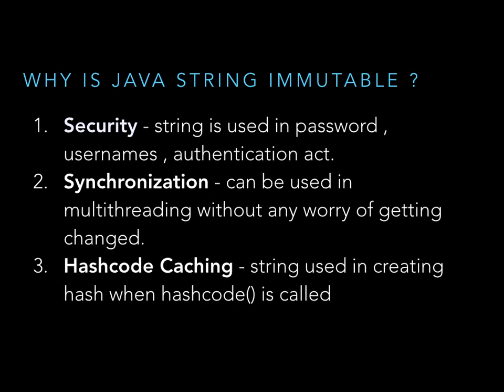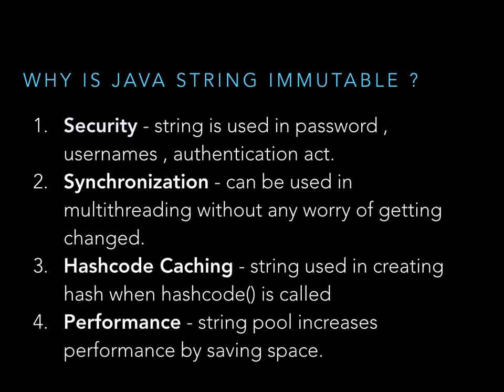The third point is hash code caching. Strings are used in creating hash codes. When the hashCode() method is called for the first time, a hash is created from the string value. Since strings are immutable, this hash always returns the same value throughout the program.